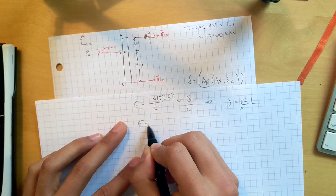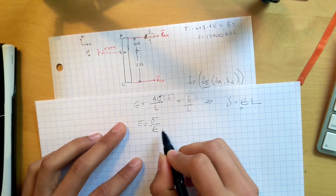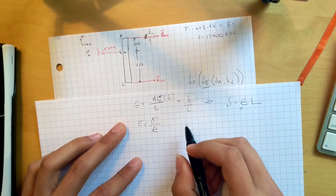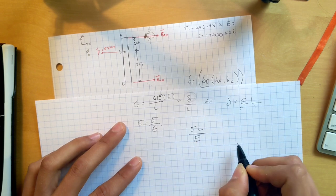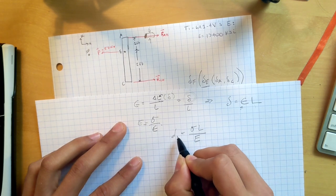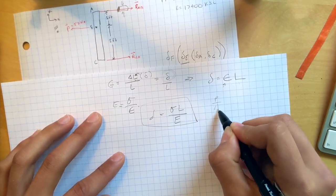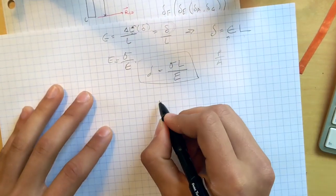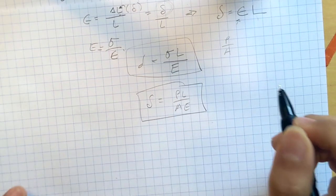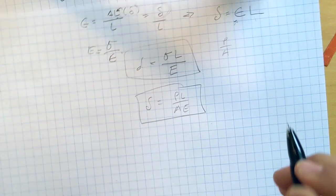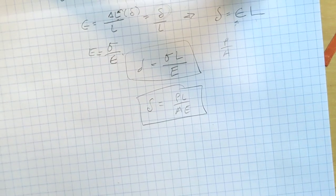We also have Young's modulus, which is equivalent to the ratio of stress over strain. So if we plug this into this, do some rearranging, then we end up getting this guy. And we know that the stress is just P over A. So all of this equates to this beautiful equation that is going to carry us through this problem. The P is the force, and L is the length, and A is the cross-sectional area, and E is Young's modulus.